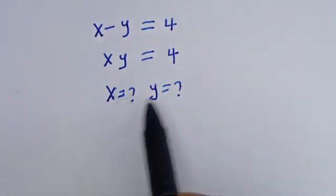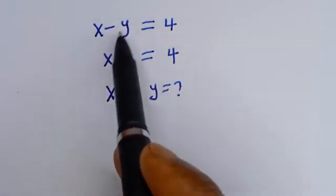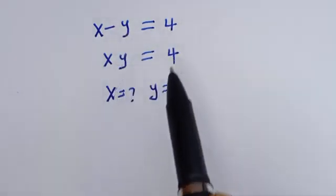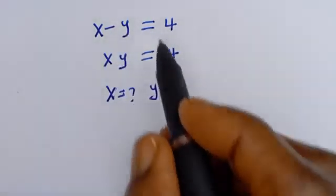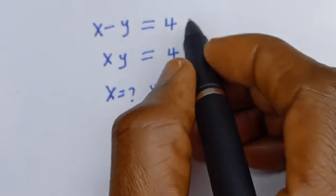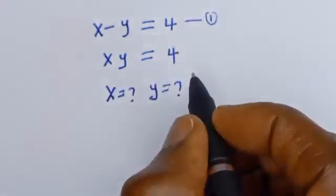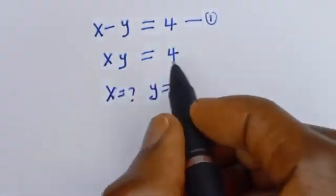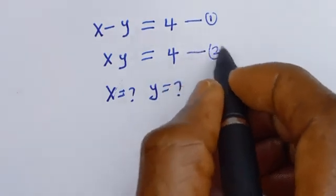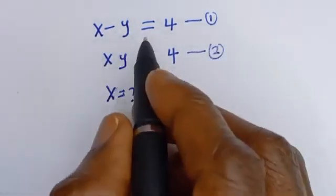Hello. How to solve for x and y in this equation: x minus y is equal to 4 — let's call this equation 1 — and xy is equal to 4 — let's call this equation 2.